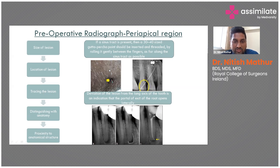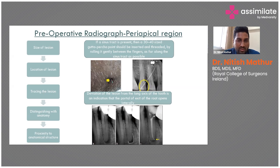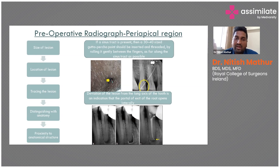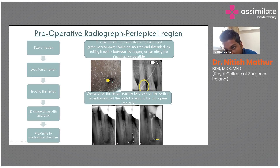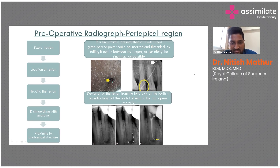Sometimes you need to trace the lesion if there is a sinus opening. A size 30 to 40 gutta-percha point should be inserted and threaded by rolling it gently between the fingers, advancing it as far along the sinus tract as possible. You can clearly see the carious lesion on one tooth, but the sinus tract traced with the gutta-percha may lead to a different tooth. Tracing is very important whenever a sinus tract is present.